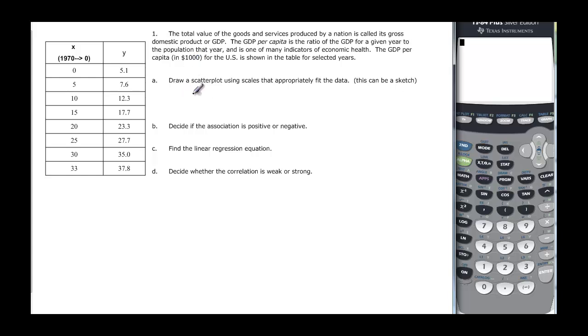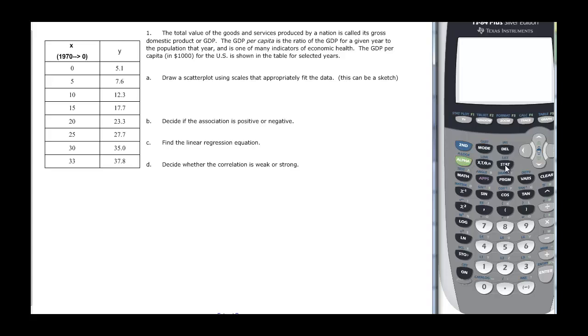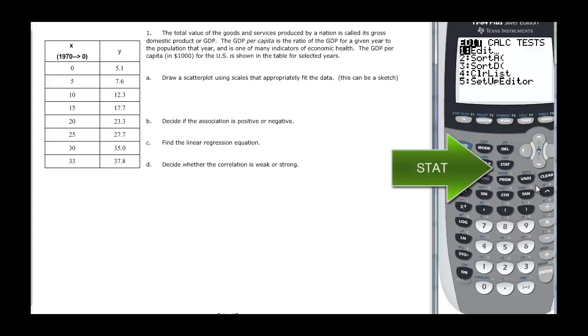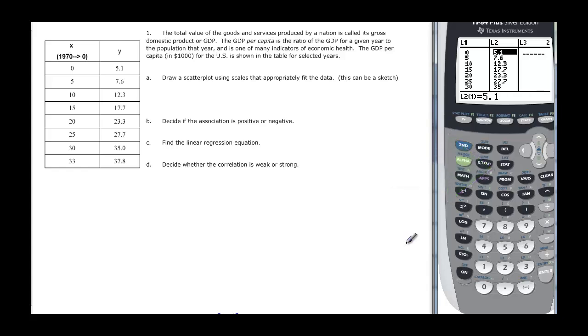Our first problem says the total value of goods and services produced by a nation is called its gross domestic product, or GDP. It's showing us here in the X column that we want to start in the year 1970, and that will be year zero. So when we go over to our calculator, first thing we need to do is hit the stat key over here by the arrows, and then we want to press enter. Now I've already entered all my data in, so this time I'll just use the data that I have, and next time I'll show you how to clear it out and put it in.